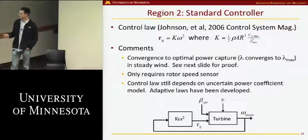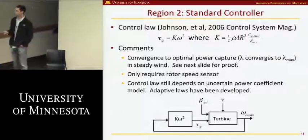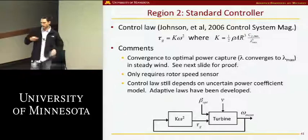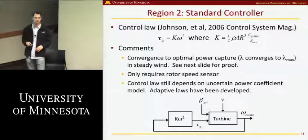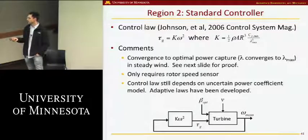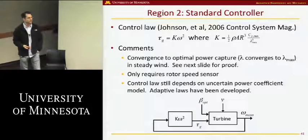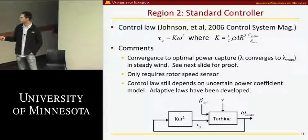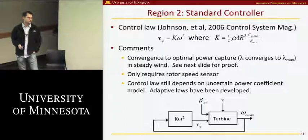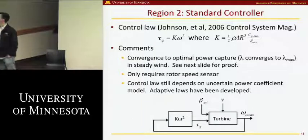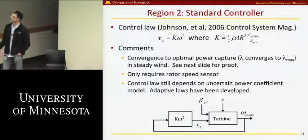What's really nice about the k×ω² law is that the only thing you have to measure is the rotor speed — no wind speed measurement is needed. People are investigating whether using a LIDAR on the front of the turbine to measure wind speed more accurately would allow significantly better performance. It turns out that this k×ω² law already gets within about three or four percent of optimal, making it very hard to economically justify the cost of a LIDAR. This standard control law has been well established in the literature.